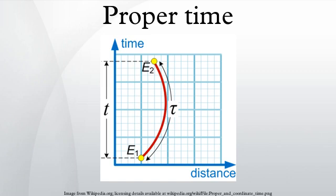In relativity, proper time is the elapsed time between two events as measured by a clock that passes through both events. The proper time depends not only on the events but also on the motion of the clock between the events.